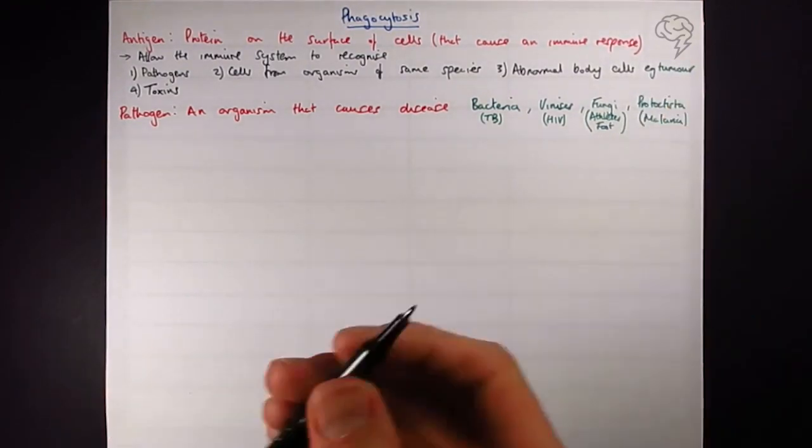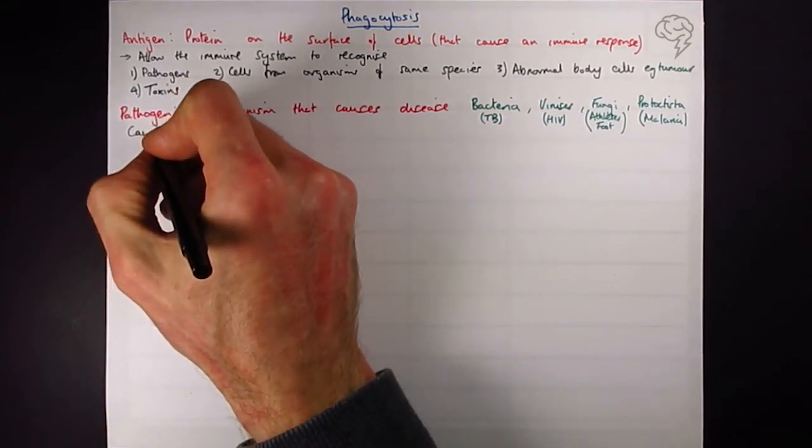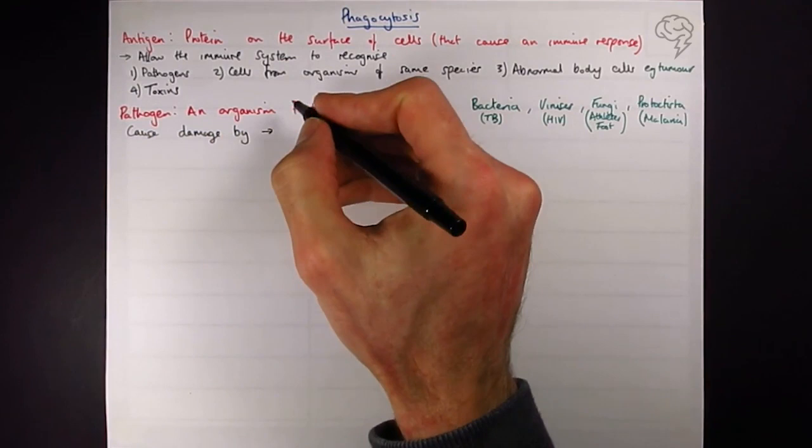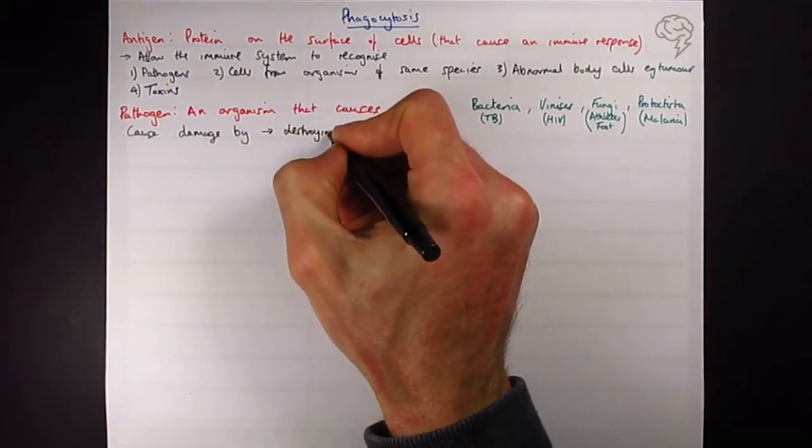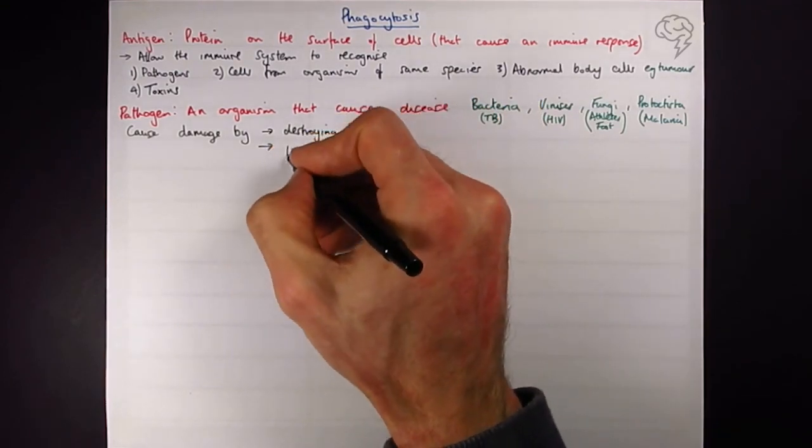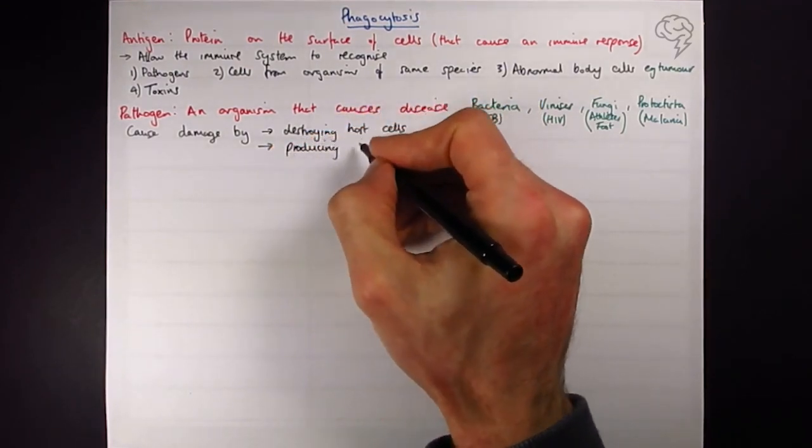They cause damage in the host by destroying their cells or by producing toxins. So they cause damage in the host by destroying their cells.